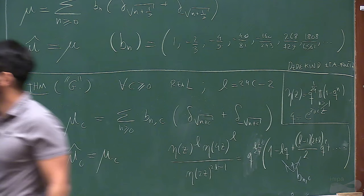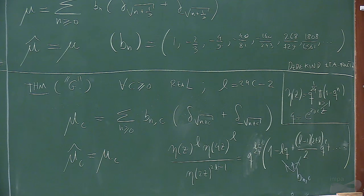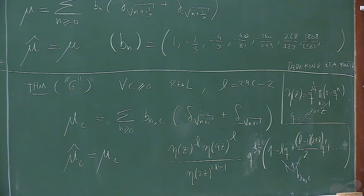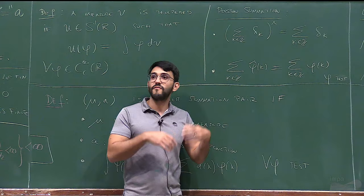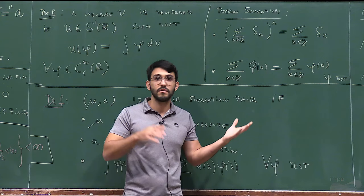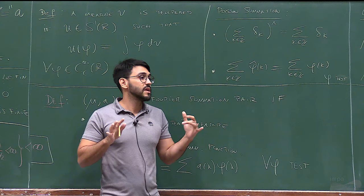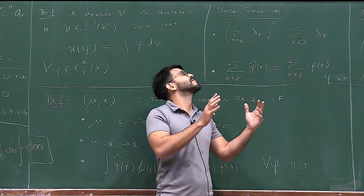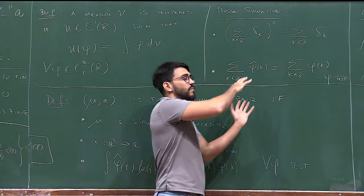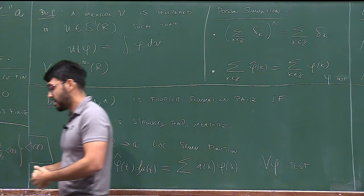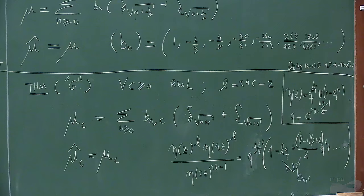Let me try to give a proof of Poisson's summation which is in a way a toy version of the proof of the main result I want to present—specifying the proof I have for the general result to the Poisson's summation case, to exemplify how things might go.